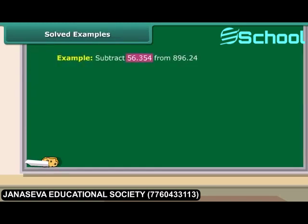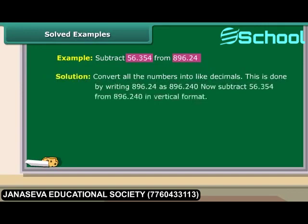56.354 and 896.24 are unlike decimals and must be converted into like decimals first; only then can the subtraction be performed. 56.354 has 3 decimal places whereas 896.24 has 2, so 896.24 must be written as 896.240. Now let us perform the subtraction.